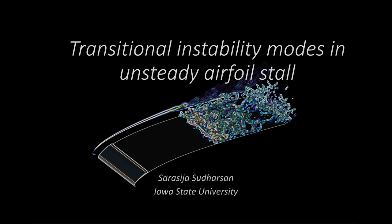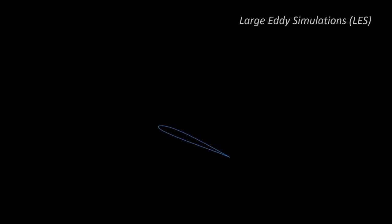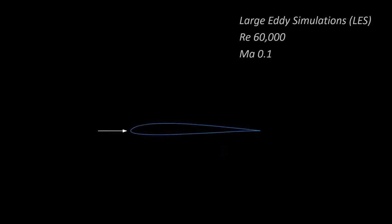This presentation showcases the simultaneous growth of two transitional instabilities in an unsteady airfoil stall simulation. These results are from unsteady wall-resolved large eddy simulations of an airfoil pitched up at a Reynolds number of 60,000 in the incompressible regime.